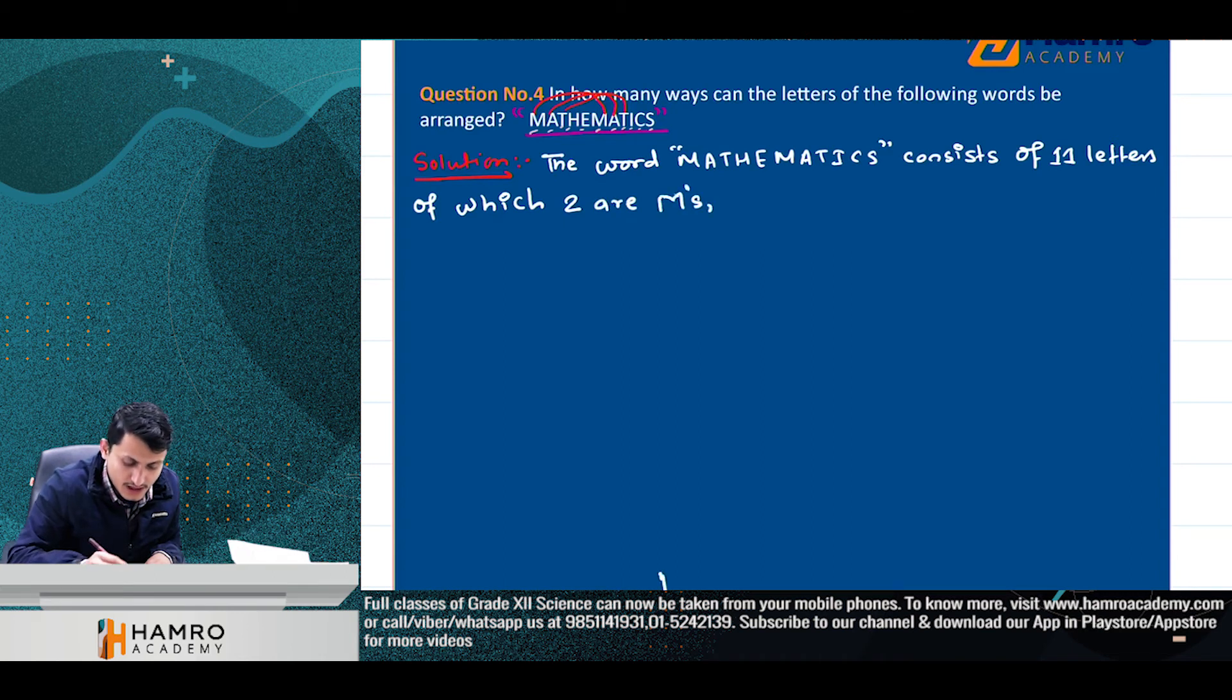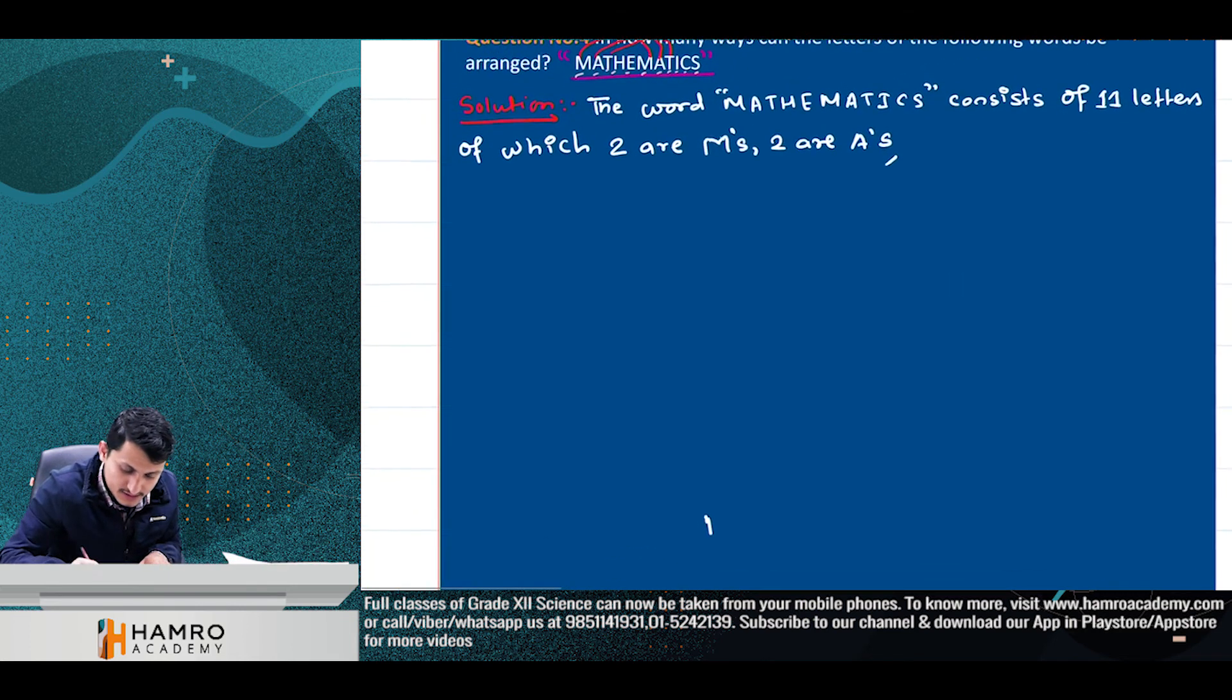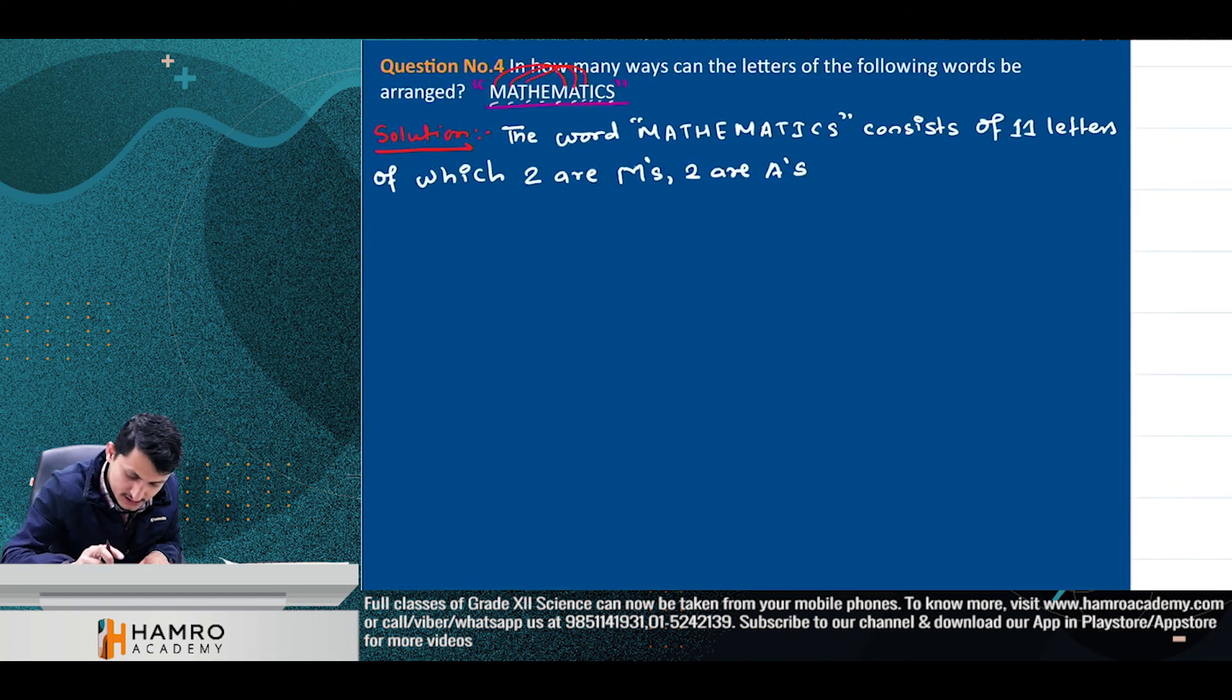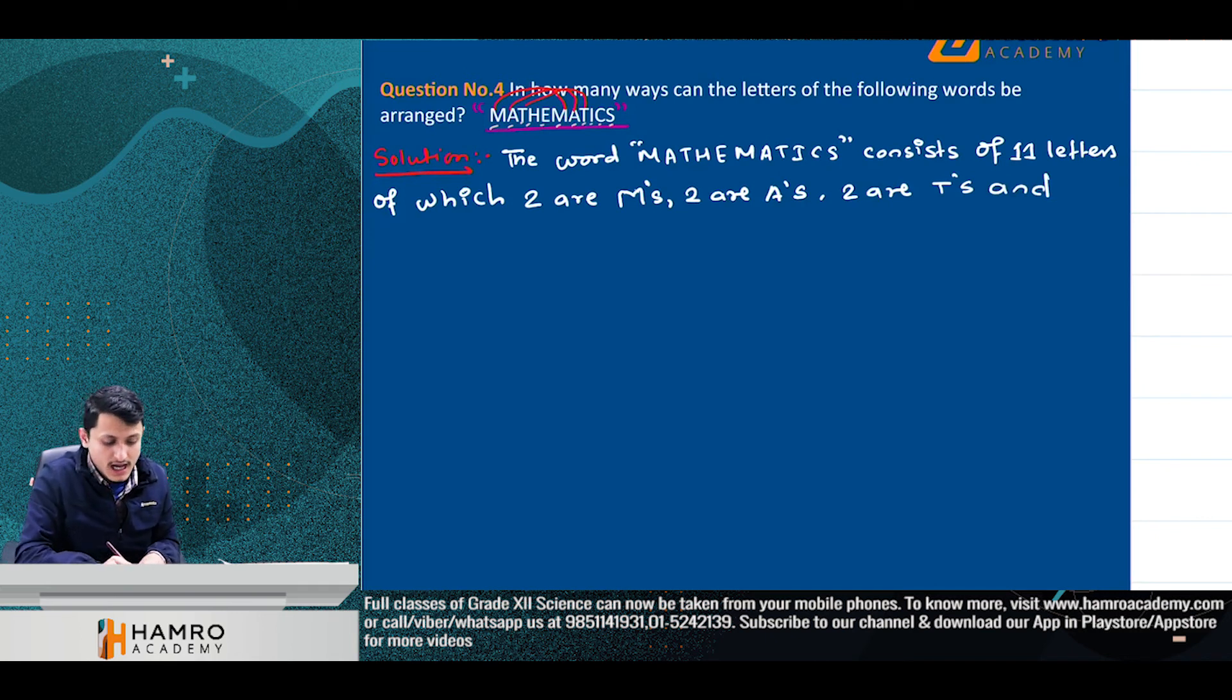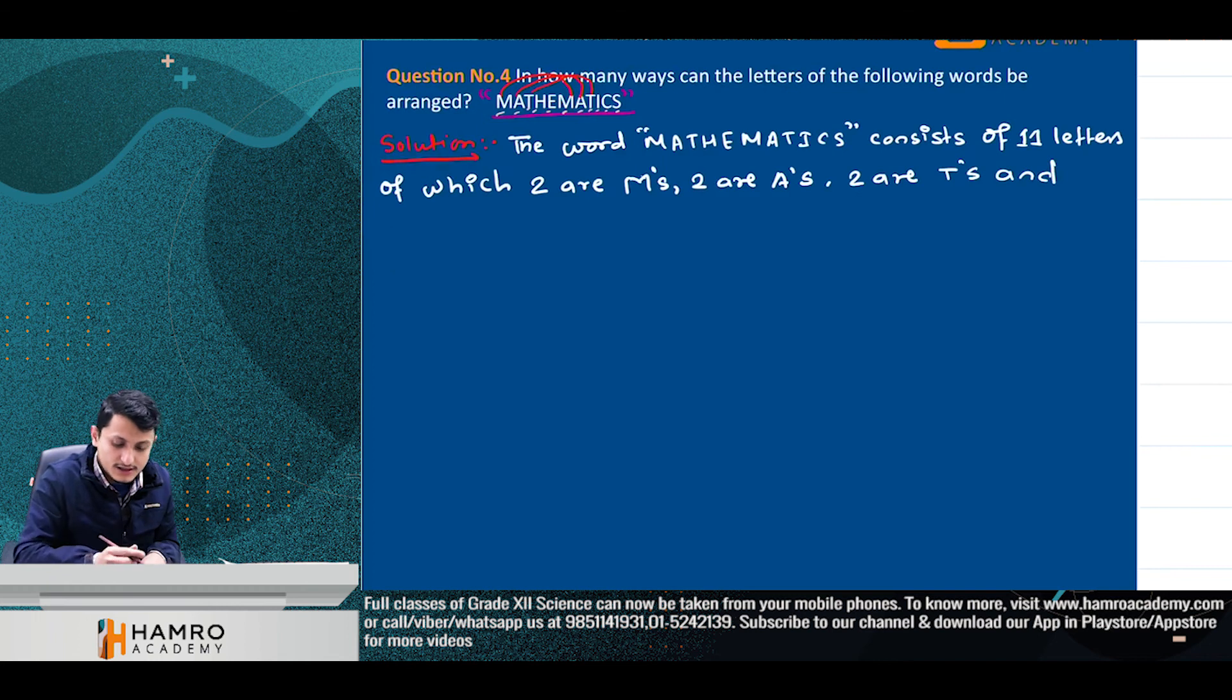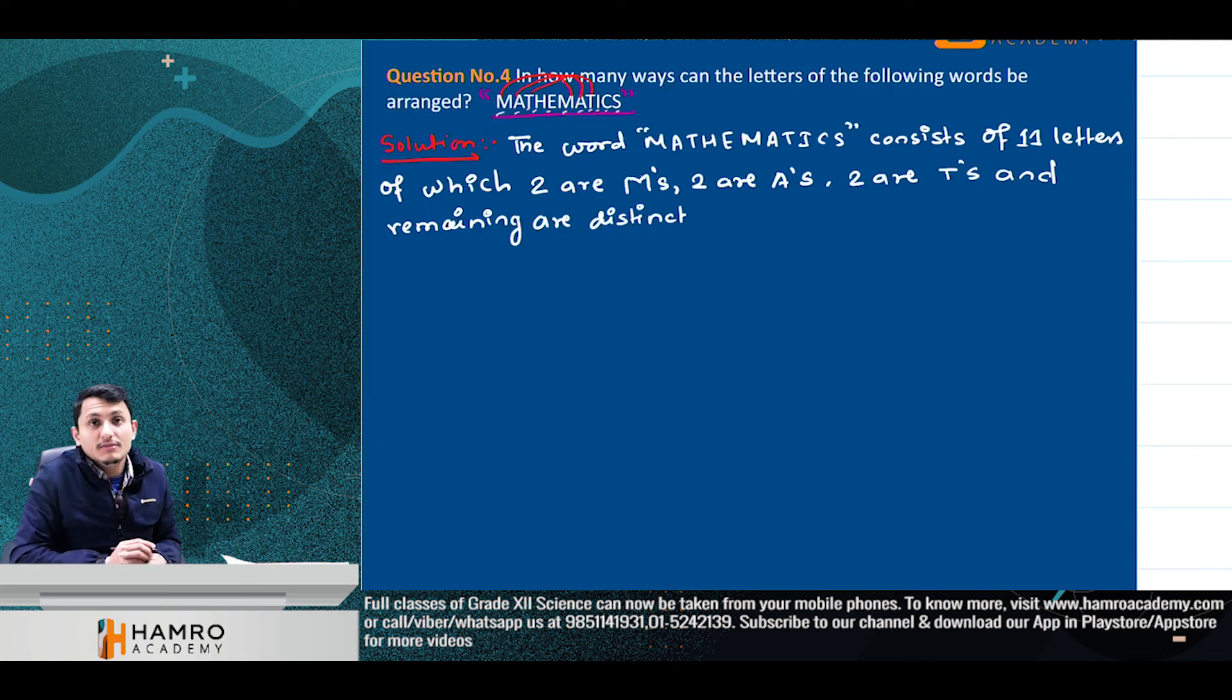Of which, two are M's, two are A's, and two are T's. There are two M's, two A's, and two T's. The remaining letters are distinct. So the total number of letters is eleven, with two M's, two A's, two T's, and the remaining are distinct.